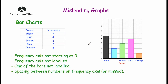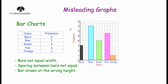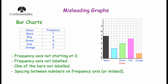Now here's another bar chart with colours black, blue, green, pink and orange, with frequencies 7, 4, 5, 6 and 3. One problem with this one is the frequency axis — the vertical axis — is not labeled. The previous one was labeled with 'frequency' on the vertical axis and 'color' on the horizontal. Here I didn't label the vertical axis. Also, the frequency axis doesn't start at zero — it starts at two. If you're doing a bar chart, you really should start at zero at the bottom.